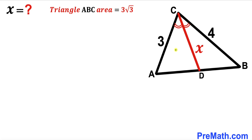Welcome to pre-math. In this video we have triangle ABC along with angle bisector CD, as shown in the diagram, such that side length AC is 3 units.